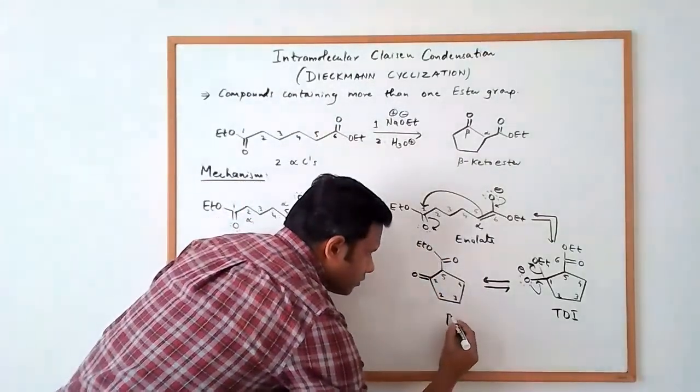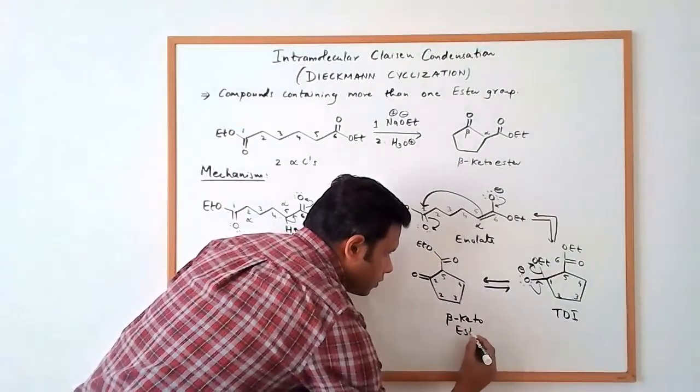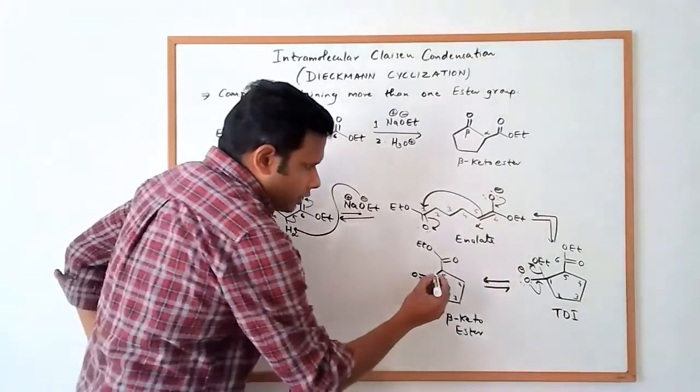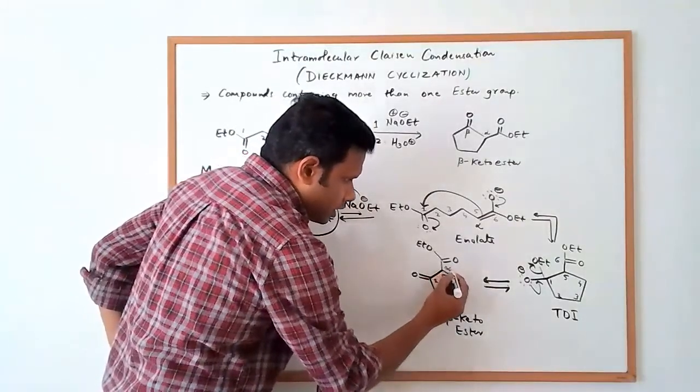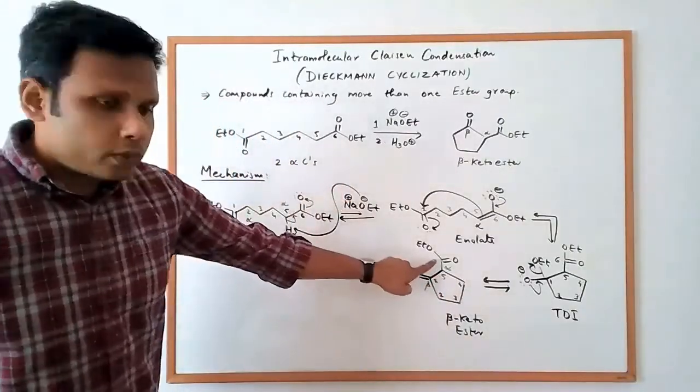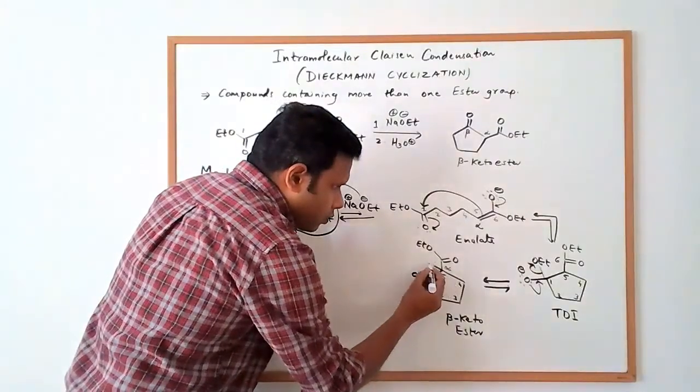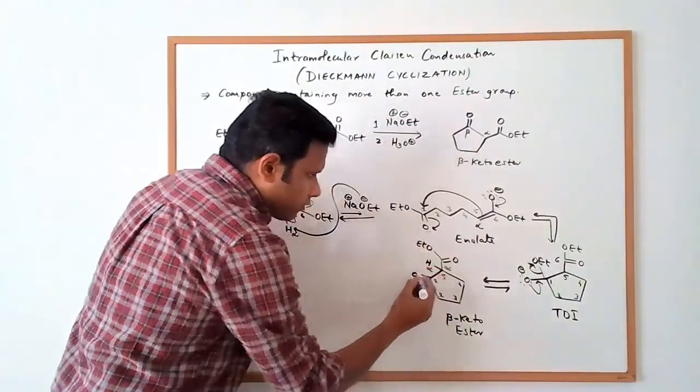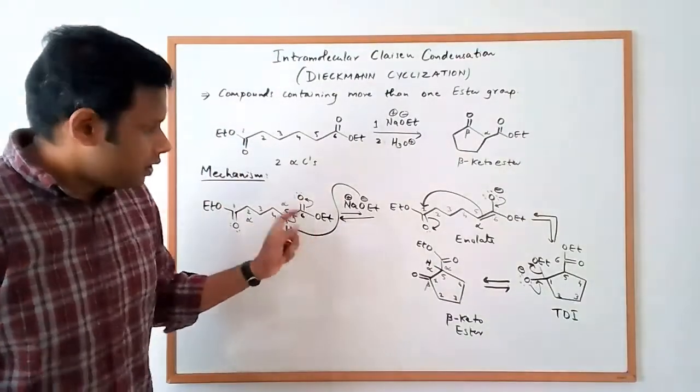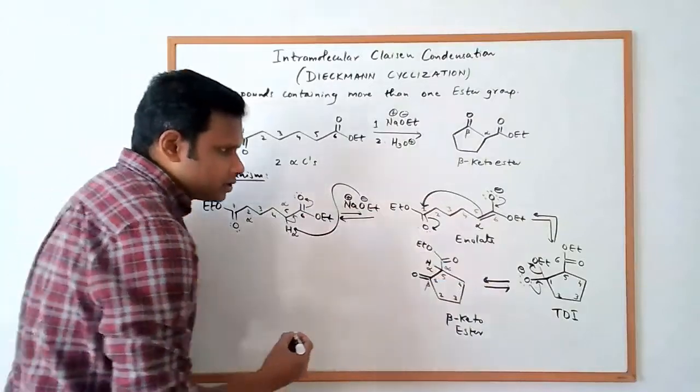So essentially, you look at it, we made the beta-keto ester here. And this is the alpha carbon. This is the beta carbon relative to the ester. We have one more alpha hydrogen here. There were two alpha hydrogens on carbon 5. We used one in the first step. We still have one more alpha hydrogen left here.